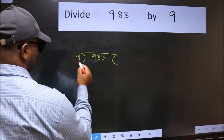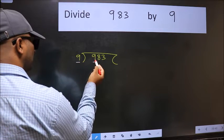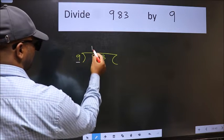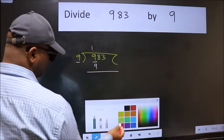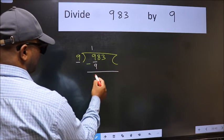Here we have 9 and here 9. When do we get 9 in the 9 table? 9 once 9. Now we should subtract. We get 0.